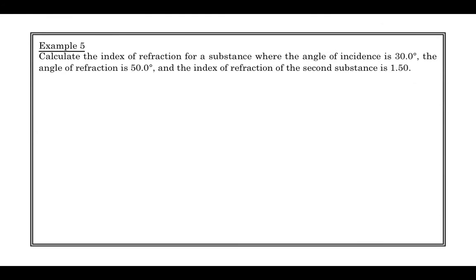Last example of this lesson. Calculate the index of refraction for a substance where the angle of incidence is 30 degrees. The angle of refraction is 50 degrees, and the index of refraction in the second substance is 1.5. So this, again, is quite a straightforward little calculation. Quick diagram, just to show the index of angle of incidence and the angle of refraction.